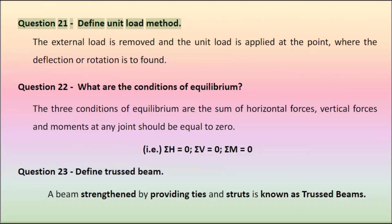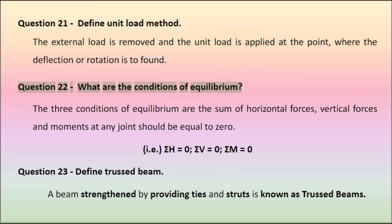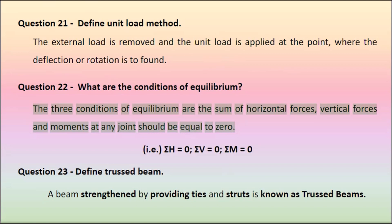Question 21: Define unit load method. The external load is removed and the unit load is applied at the point where the deflection or rotation is to be found. Question 22: What are the conditions of equilibrium? The three conditions of equilibrium are: the sum of horizontal forces, vertical forces, and moments at any joint should be equal to zero — i.e., sigma H equals zero, sigma V equals zero, sigma M equals zero.